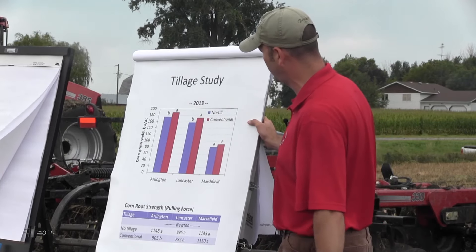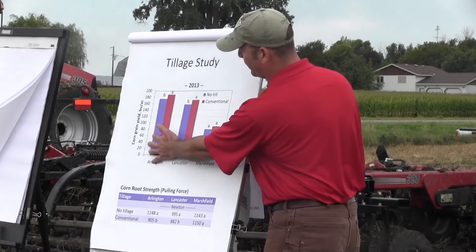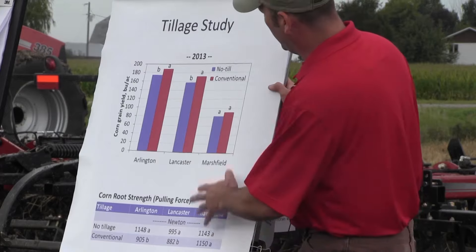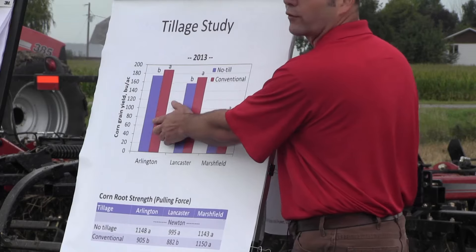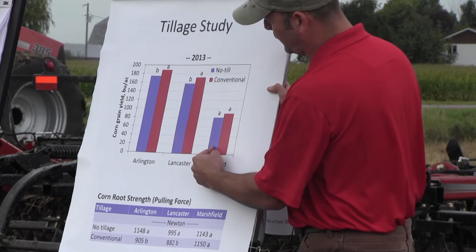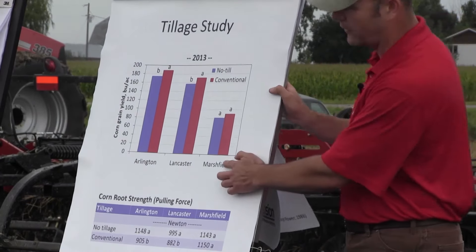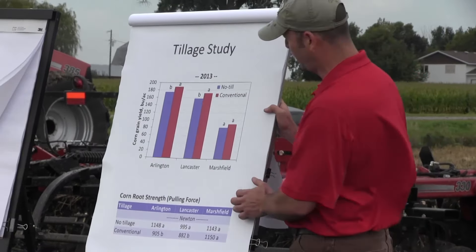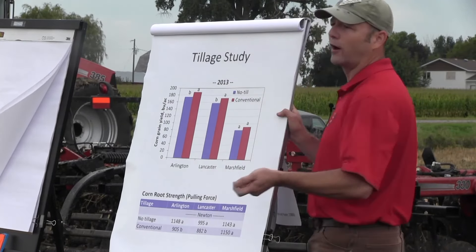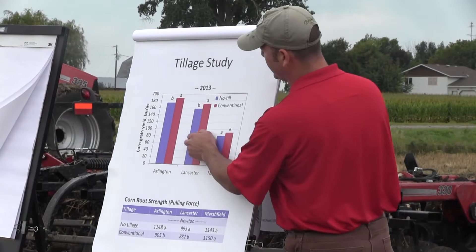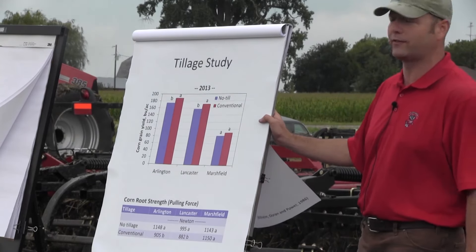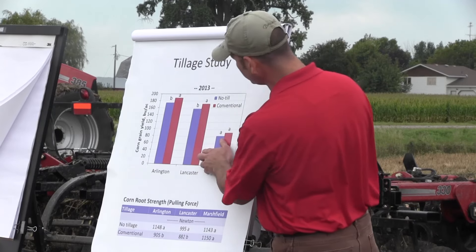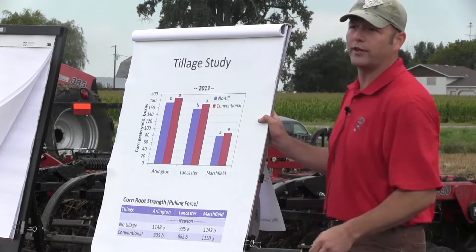Here's data from experiments I'm conducting at three locations around Wisconsin. We have a no-till system and a conventional system — a fall chisel and a soil finisher in the spring. At Marshfield, which has a lot of drainage issues, yields were poor with no difference between tillage systems. At Arlington — prime soils in Wisconsin — there was a significant difference where no-till was actually lower than conventional. Similarly at Lancaster in the southwest, on soils prone to erosion, no-till was significantly lower than conventional.